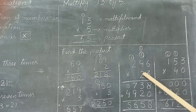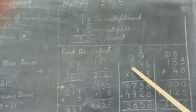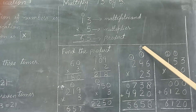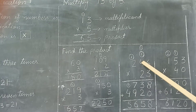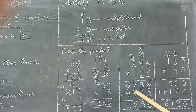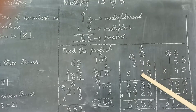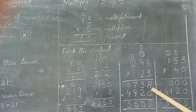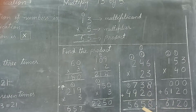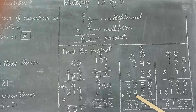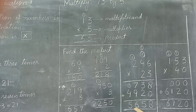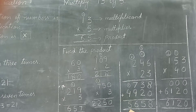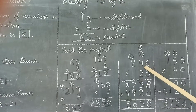Toh 20 ko baar baar 6 se, 4 se, 2 se multiply karna thoda mushkil hai. Hum kya karenge: kyunki yeh 20 hai, iske saath waala 0 second step mein already put kar denge. Ab sirf 2 ko one by one saare digits ke saath multiply karenge. 2 sixes are 12 — 2 placed, 1 carry. 2 fours are 8, plus carry is 9. 2 twos are 4. Finally dono steps ko add karenge: 8 plus 0 is 8. 3 plus 2 is 5. 9 plus 7 is 16 — 6 placed, 1 carry. Last column plus carry gives 5. This is the product of these two numbers.